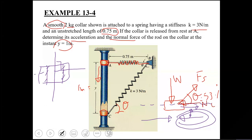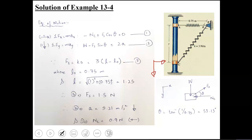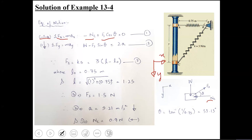Our free body diagram is now complete. Applying the equation of motion: the coordinate system uses positive X to the right and positive Y downward (since all motion is downward). Applying ΣFx = MAx: the forces along X are the normal force Nc towards the negative X-axis and the spring force component Fs·cos(theta) towards the positive X-axis.